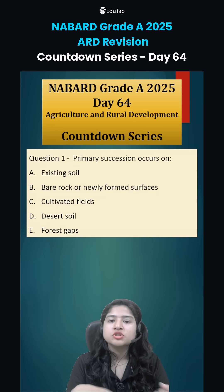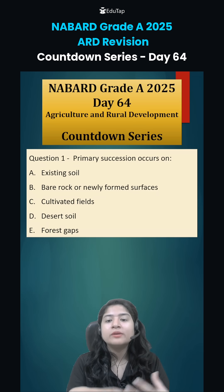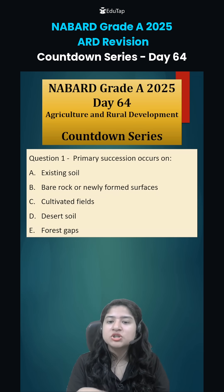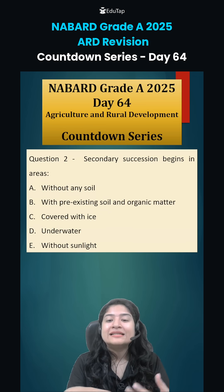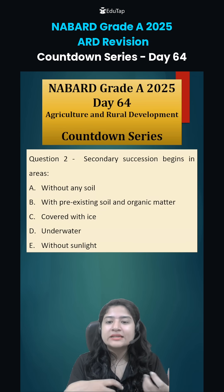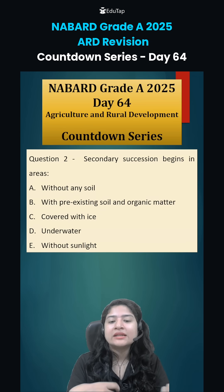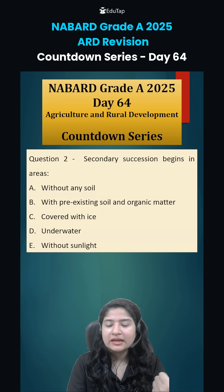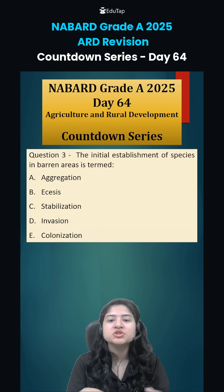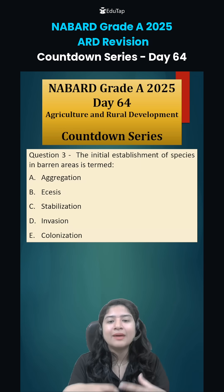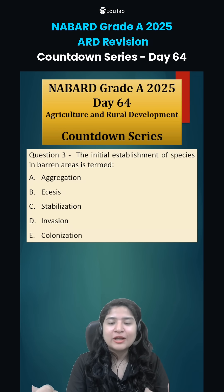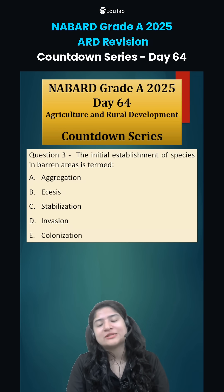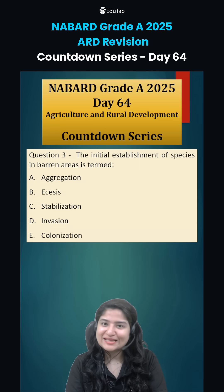Now, coming to today's questions for you. Question number 1: primary succession occurs on — you have to tell from the following options. Second: secondary succession begins in areas. And question number 3: the initial establishment of species in abandoned areas is termed as what? Comment down your answers and we will see you in the next class.